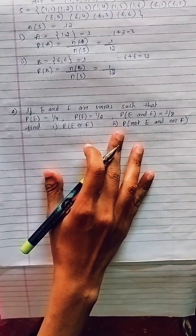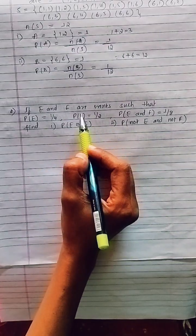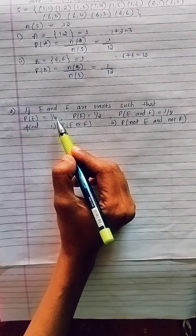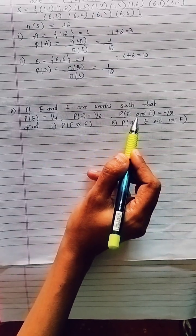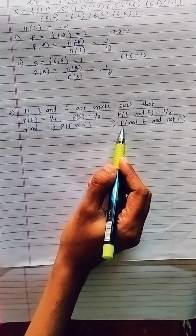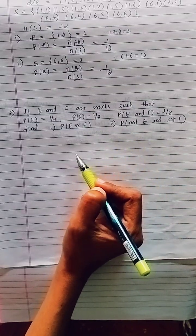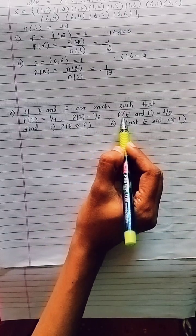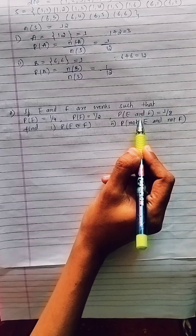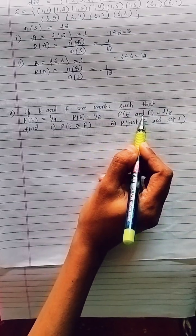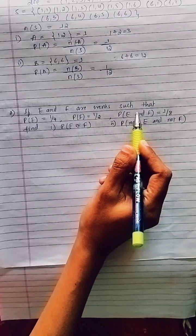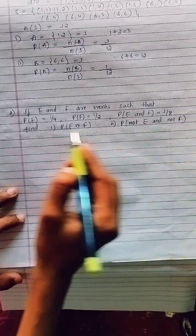The next question: E and F are events such that P(E) = 1/4, P(F) = 1/2, and P(E and F) = 1/8. Find P(E or F) and P(not E and not F). Important note: here 'and' means union and 'or' means intersection in the context of this problem's language.